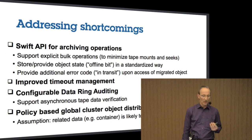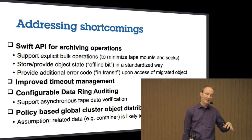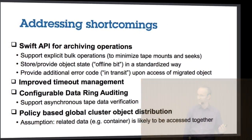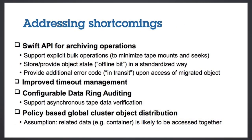Our project was to identify measures to at least make these latency implications a little less severe than before. We concentrated on several different technical approaches. One is to make the movement between a disk cache or even a disk ring within Swift to a tape ring, with an ILM implementation underneath, explicit by providing a Swift API.